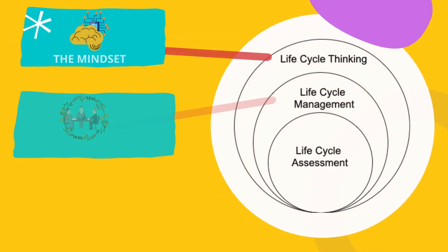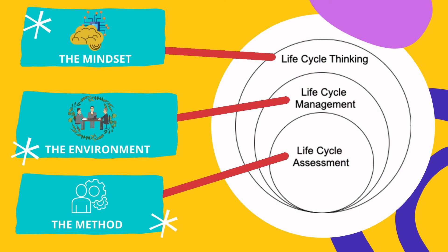Now let's continue with life cycle management and how it relates to life cycle thinking. Life cycle thinking is the mindset — a holistic systems perspective considering all environmental impacts an organization has control of through the entire life cycle. Life cycle management starts from life cycle thinking and is a business management model for the integration of product value chain actors and environmental considerations.